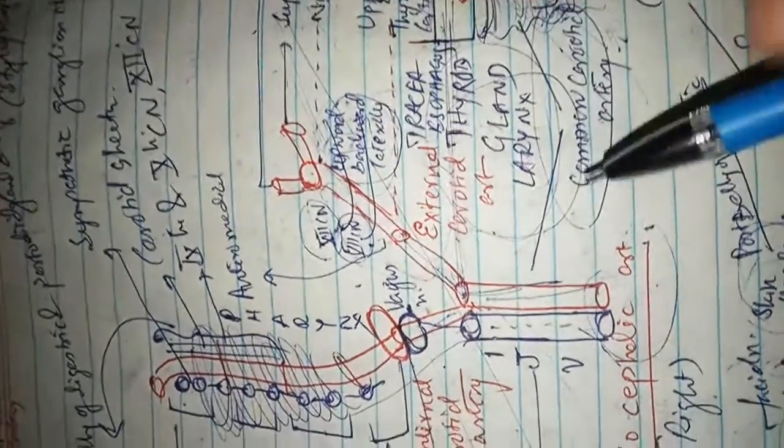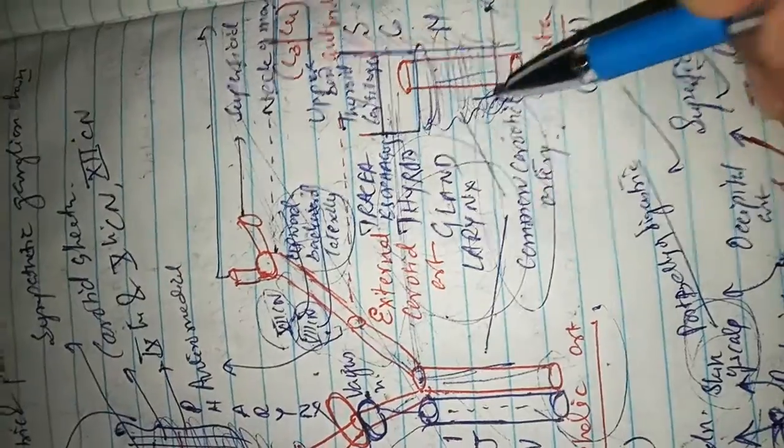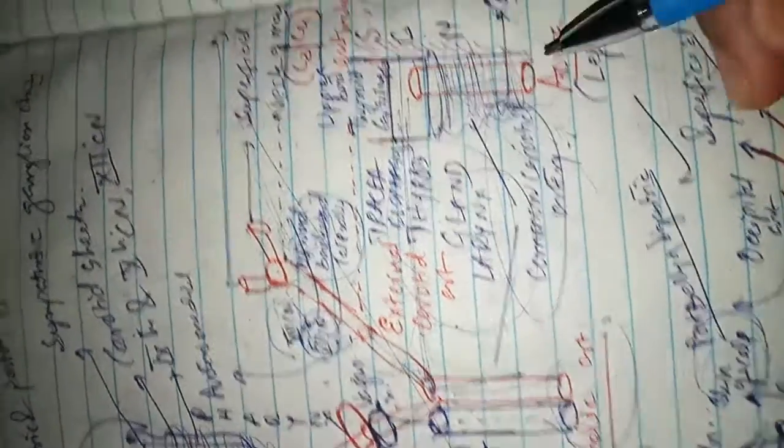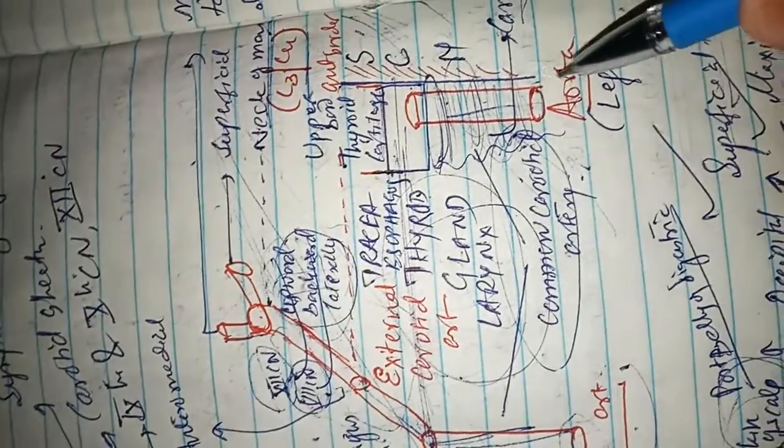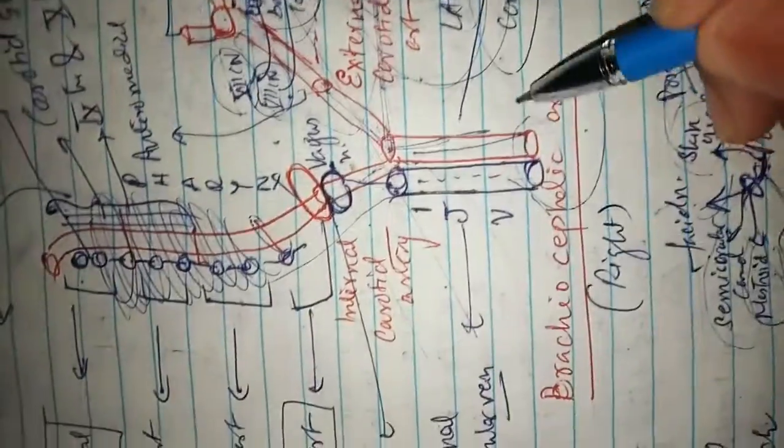Now coming to the common carotid artery, the common carotid arteries are two: left and right common carotid artery. The left common carotid artery originates from the aorta and the right common carotid artery originates from the brachiocephalic artery.